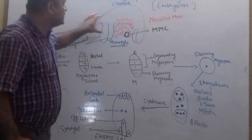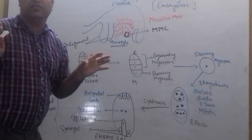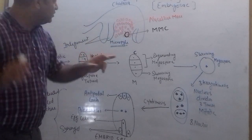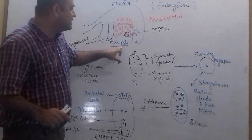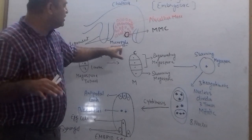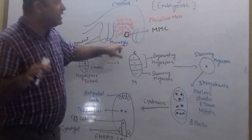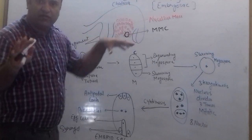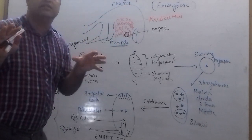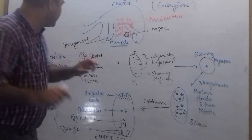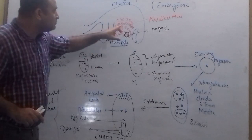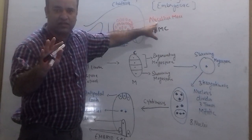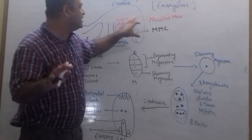This is an anatropous ovule. This opening side is known as the micropylar end, and this side is known as the chalazal end. This type of ovule is known as an anatropous ovule. These cells are known as the nucellus mass.